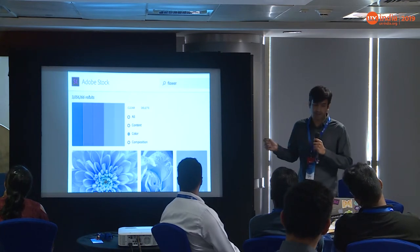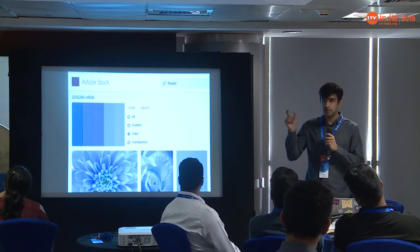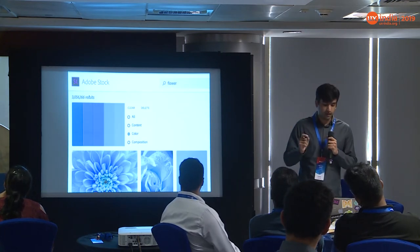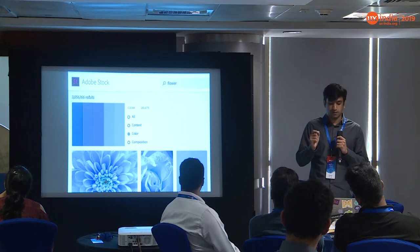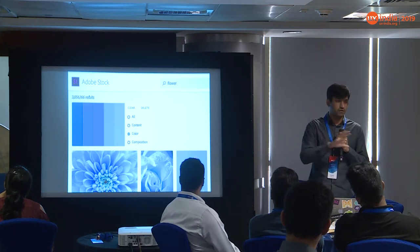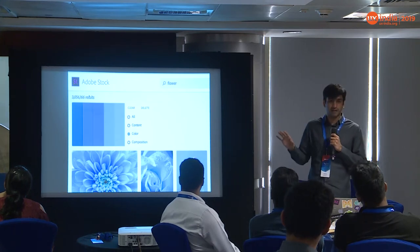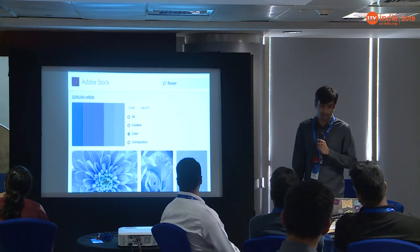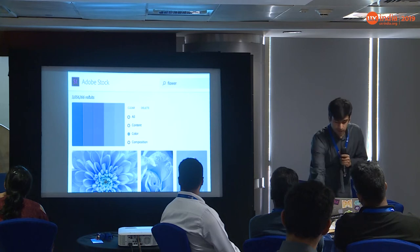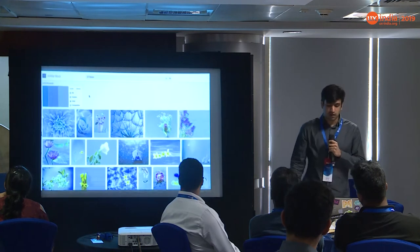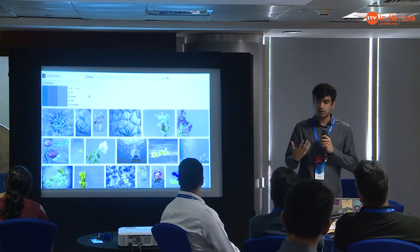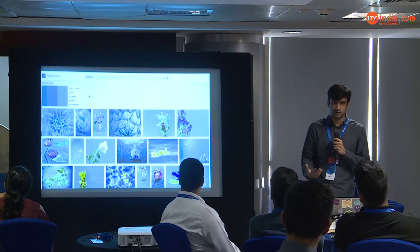Currently, there's a keyword for flower, and then you can search for color. I've uploaded this image of different palettes of a color, and the results, as you can see, represent all those different colors.